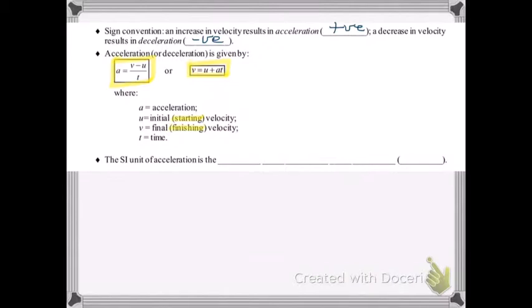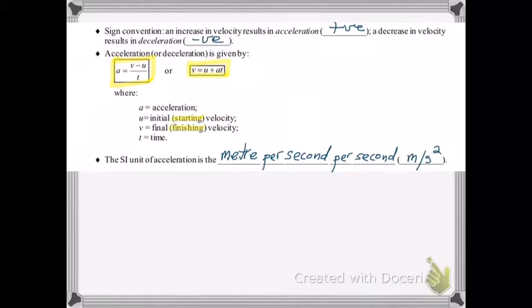Remember that in previous cases where we calculated average velocity, we always used the subscript AV to represent the average. That was specifically so that we wouldn't confuse average velocity with the final velocity, which also has the symbol V. The SI unit of acceleration is the m per second per second, or m/s squared.